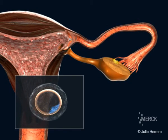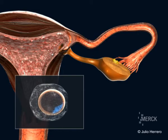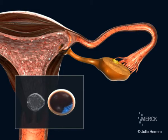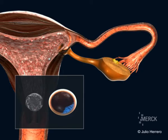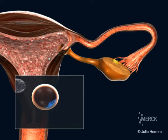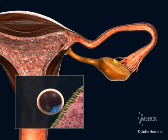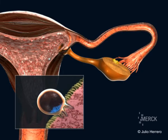The blastocyst migrates to the uterus and sheds the surrounding membrane in a process called hatching, and the embryo begins to implant in the endometrium of the uterus.